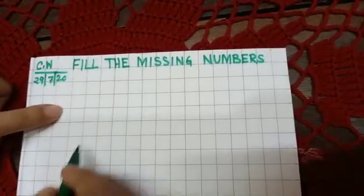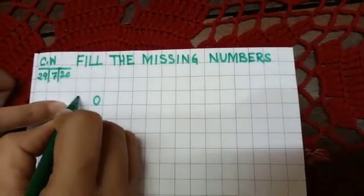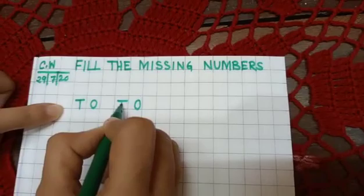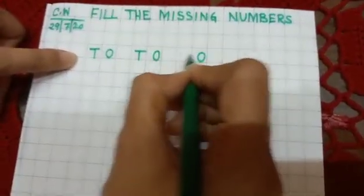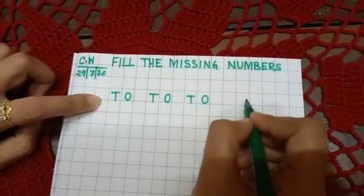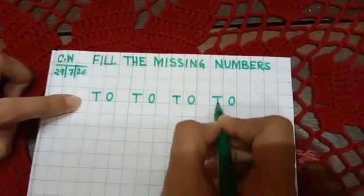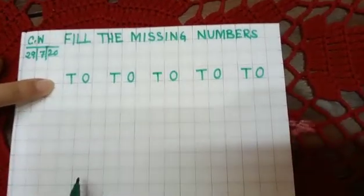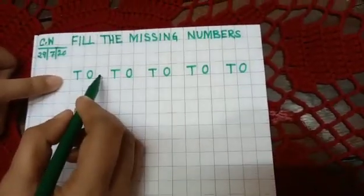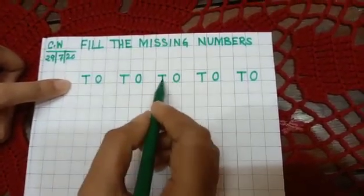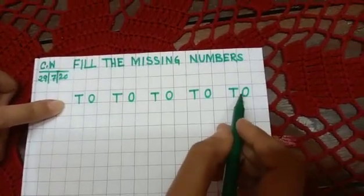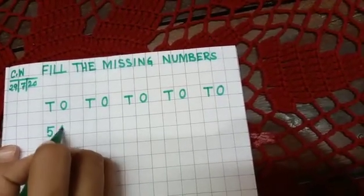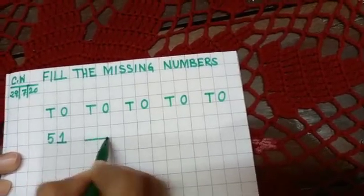Now leave two boxes and write 'Ones, Tens.' Again leave one box and write 'Ones, Tens.' Again leave one box and write 'Ones, Tens.' Repeat this pattern: leave one box, write 'Ones, Tens' — leave one box, 'Ones, Tens.'